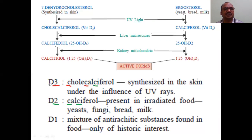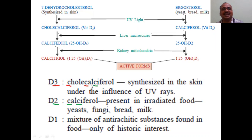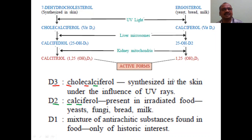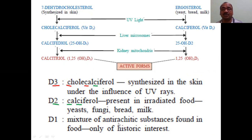Three forms are there: D3, D2, D1. D3 is also called cholecalciferol — this has appeared many times in question papers. D2 is called calciferol — only calciferol. D3 is cholecalciferol. D1 is a mixture of anti-rachitic substances. Anti-rachitic substance found in food — that is also very important.